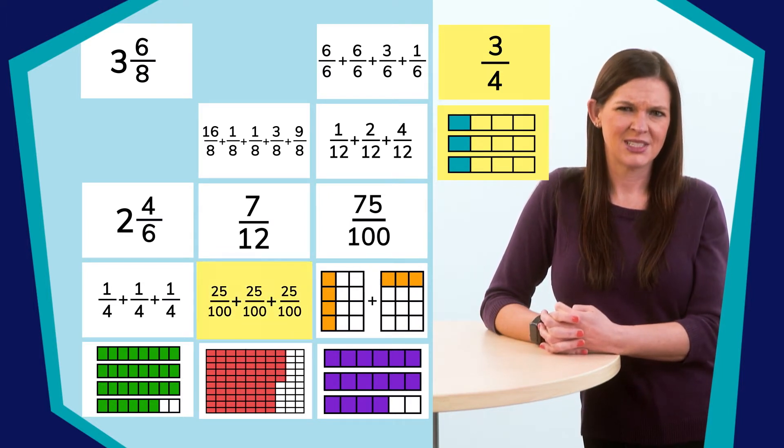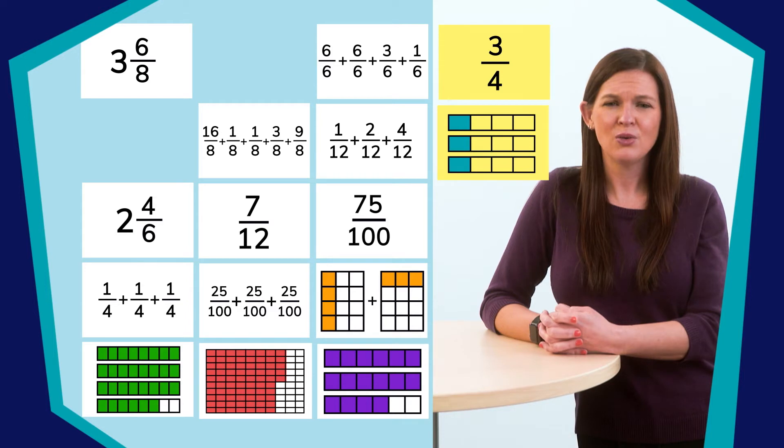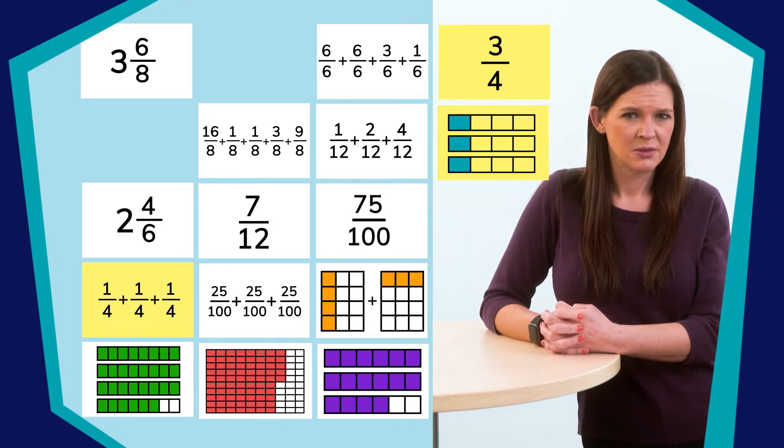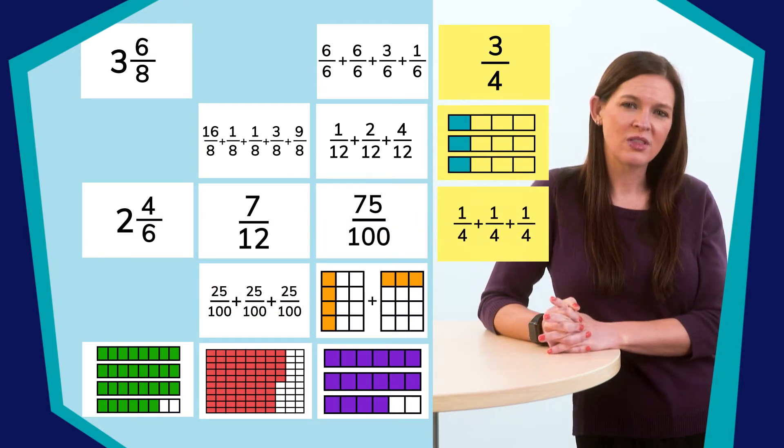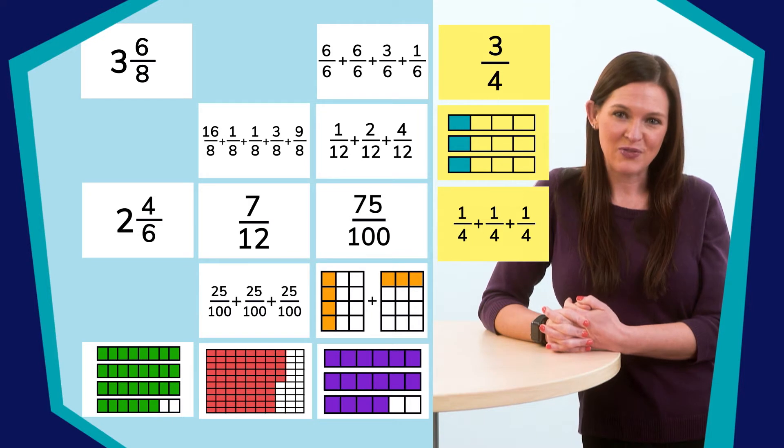I see one that has three parts, but it's adding hundredths, so I'm going to keep looking. Oh, look, here's one. Can you read this expression? Great job. 1 fourth plus 1 fourth plus 1 fourth. That equals 3 fourths.